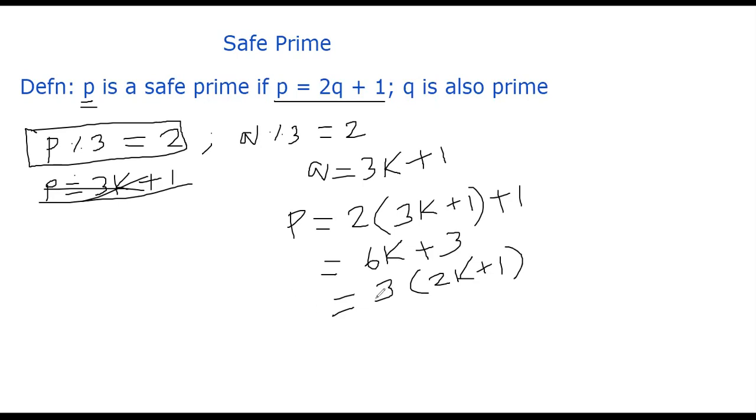Therefore, this means that q must be congruent to 2 mod 3, not 1 mod 3. So we also established this.